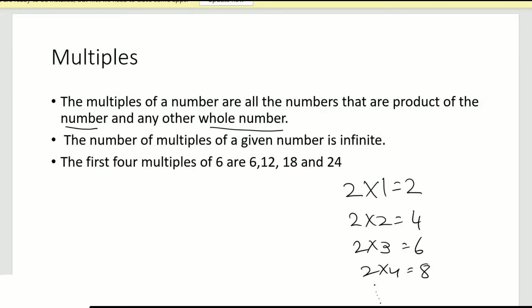There's one more example here. The first four multiples of 6 are 6, 12, 18, and 24. It's the same way, we just multiply by 1 first, then multiply by 2, multiply by 3, and then multiply by 4. So they have just given us the first 4 multiples.